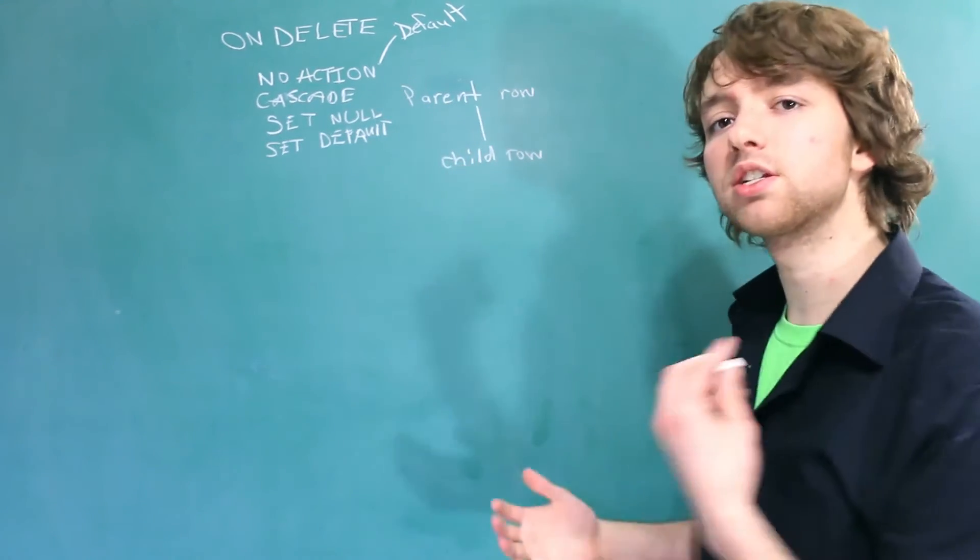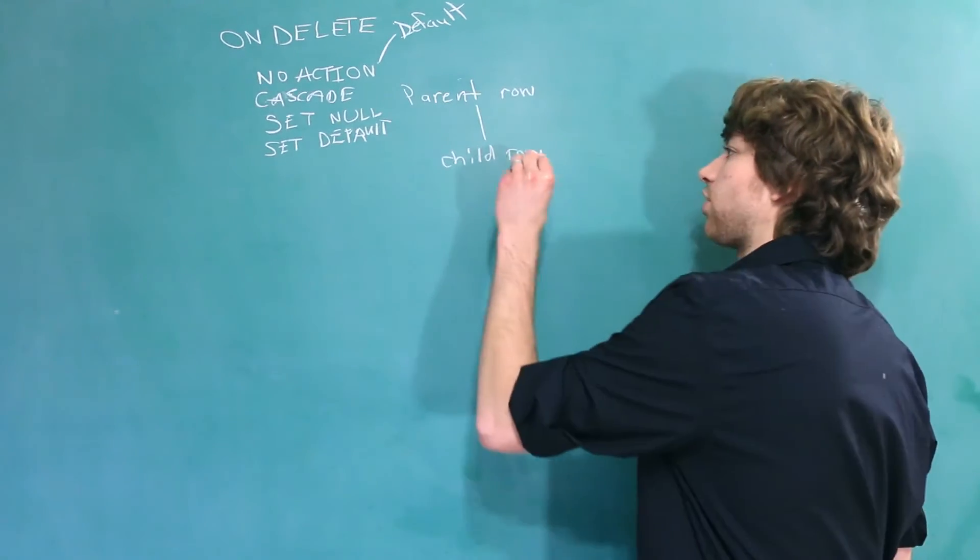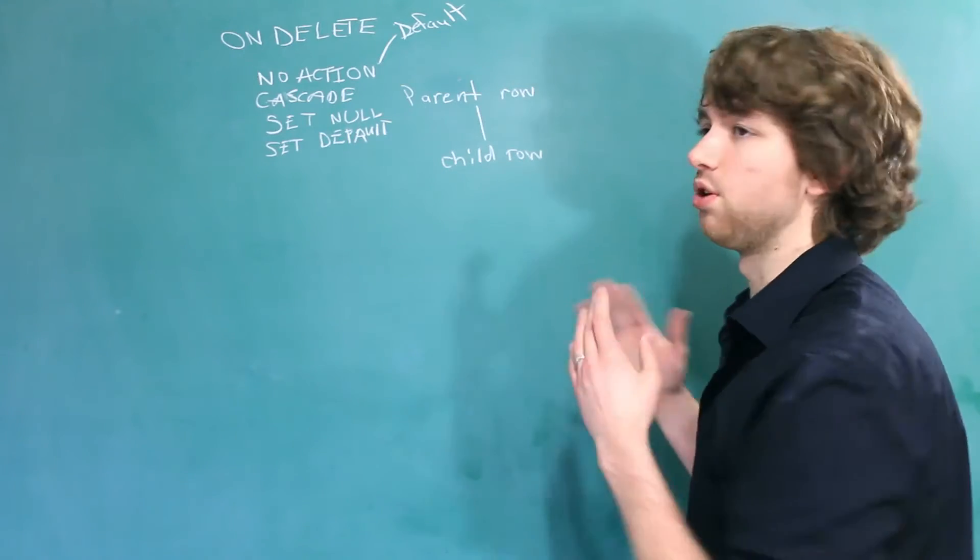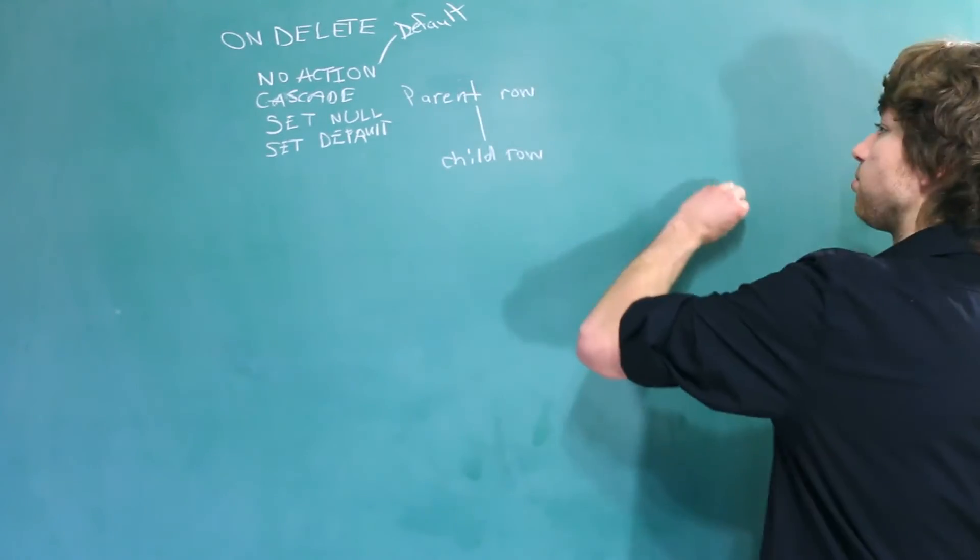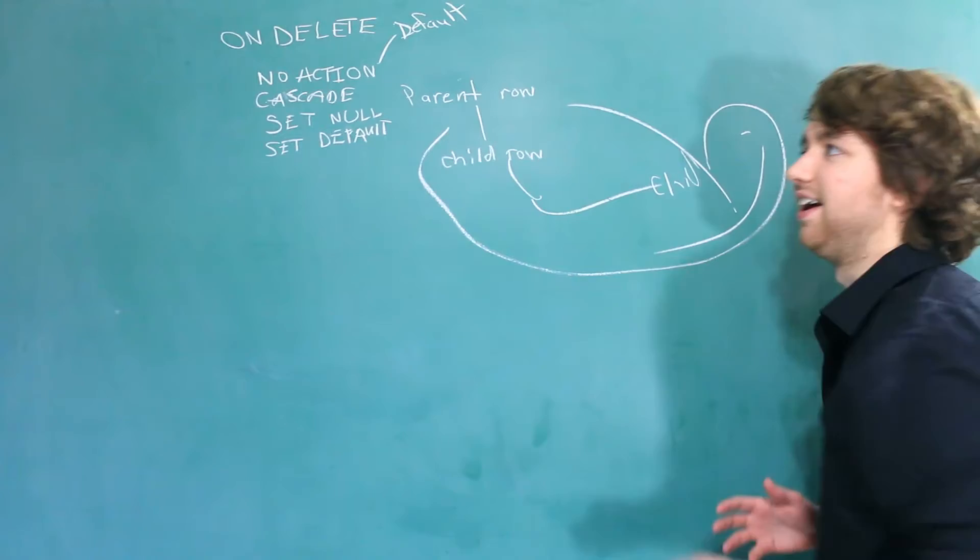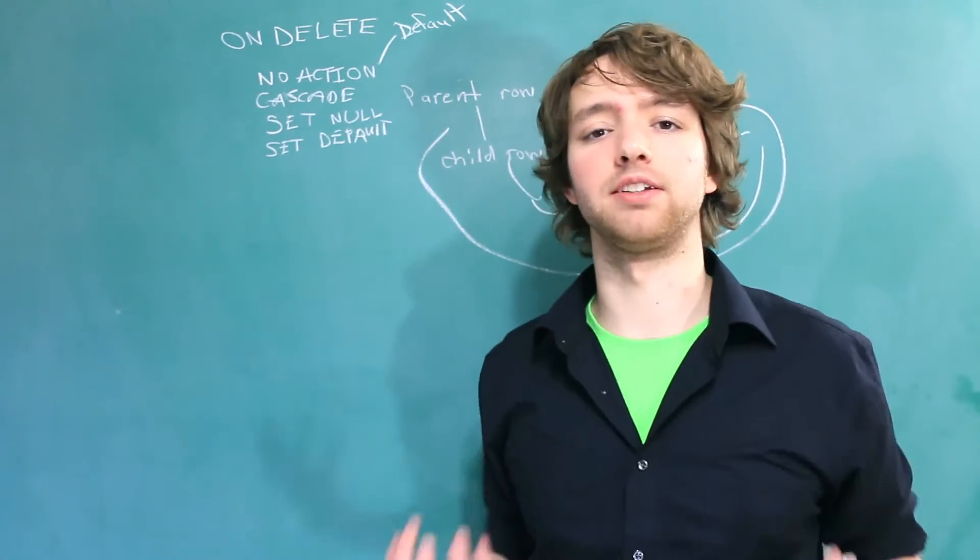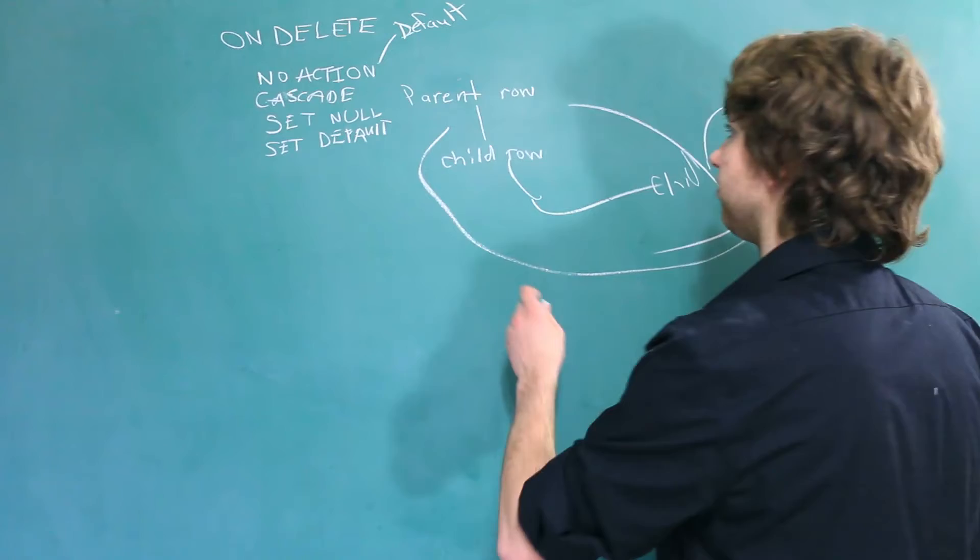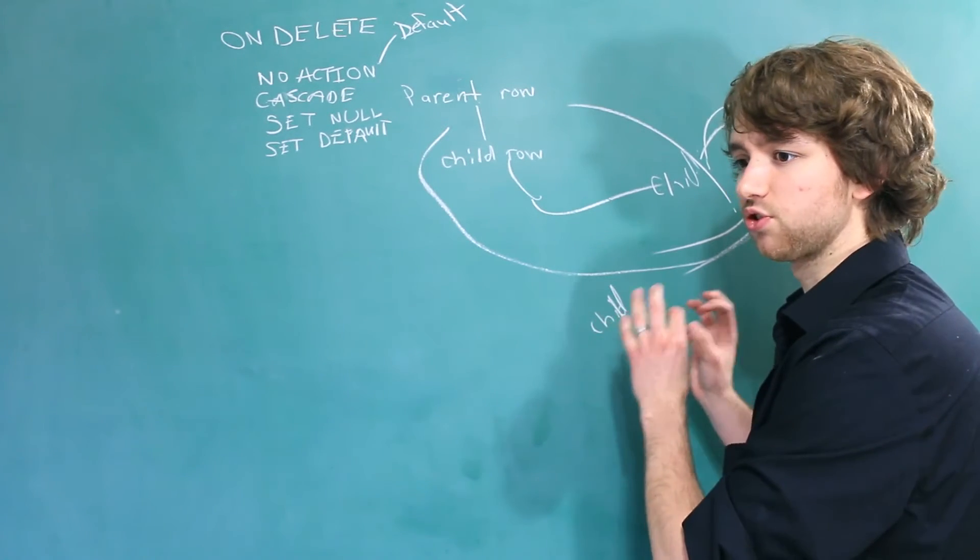What that means is if you try to delete a parent, it's just going to throw an error and say you can't do this, you cannot do this. Essentially what that means is that once a child references a parent, that parent is locked into existence until that child is no longer there. No action is probably the most safe one you can use, because once you start having all these tables and all these references, and this child references this one, and this one references this parent, you got this huge network of connections. And when you have no action, you basically can't break any of those connections accidentally.